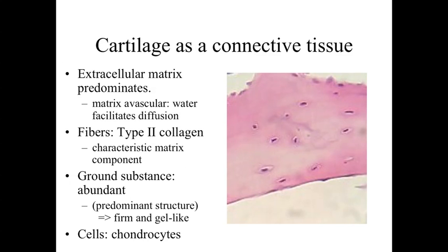Cartilage is a specialized connective tissue but still has the same overall characteristics as generic connective tissue. We're going to have cells scattered throughout — in this case referred to as chondrocytes, 'chondro' for cartilage and 'cyte' for cells. These chondrocytes are scattered throughout the cartilage tissue, and in between them we have the intervening extracellular matrix, which is the predominant tissue component within the cartilage structure.